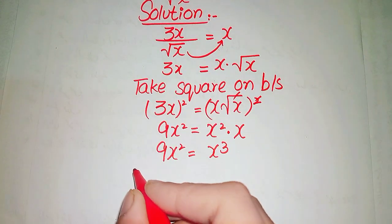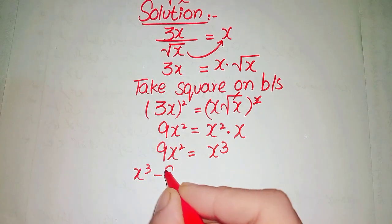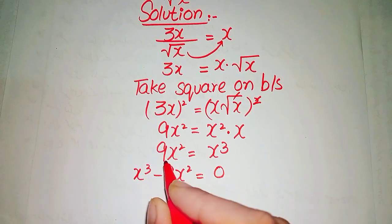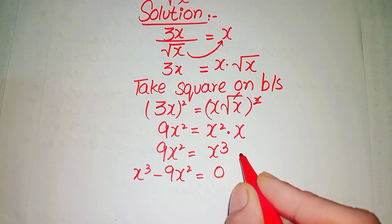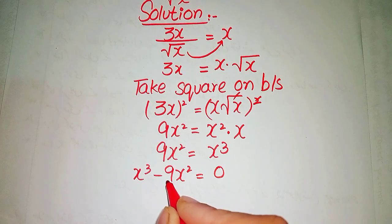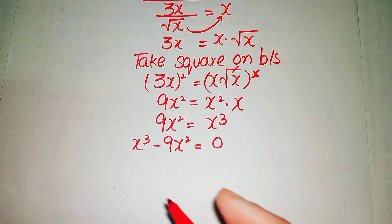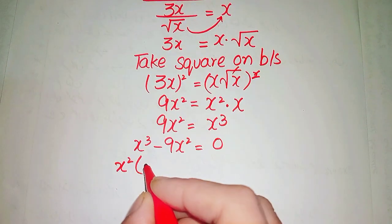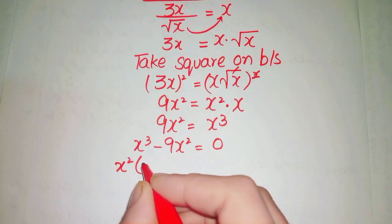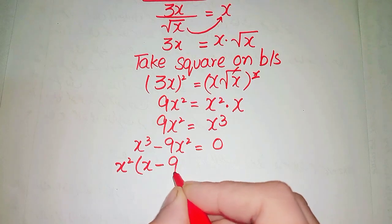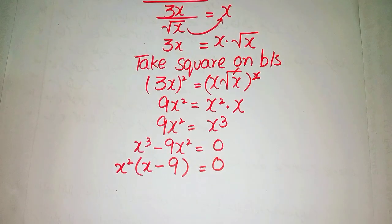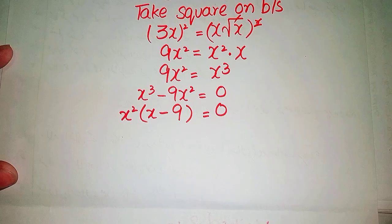When we solve this, it becomes 9x squared equals x cubed. Rearranging, we get x cubed minus 9x squared equals 0. We can see that x squared is common, so we factor it as x squared times (x minus 9) equals 0.